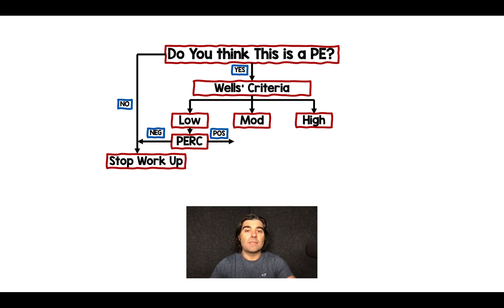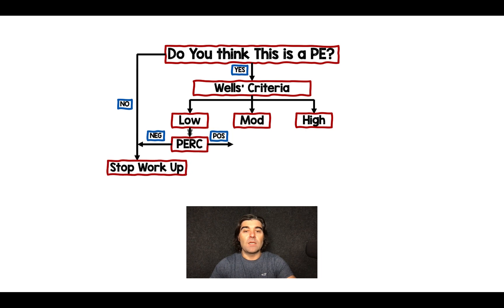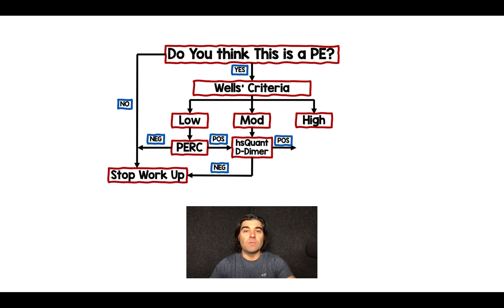If my PERC score is positive, then I go into the moderate pathway where I'm doing a high-sensitivity quantitative D-dimer. If that is negative, then my workup is done. There are lots of ways to do this — age-adjusted, risk-adjusted, all these different criteria that are out there — but this is just creating a mental construct for you.